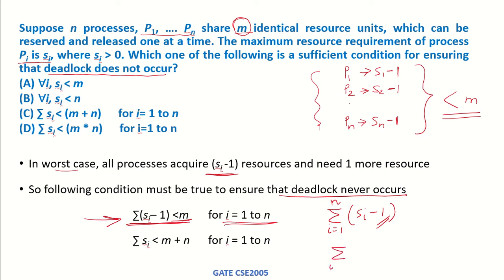So that means the necessary condition is sum from i equals 1 to n of Si minus n should be less than m. Or if we take this n to the right hand side, it would become summation of all the resources that all the processes require should be less than m plus n.